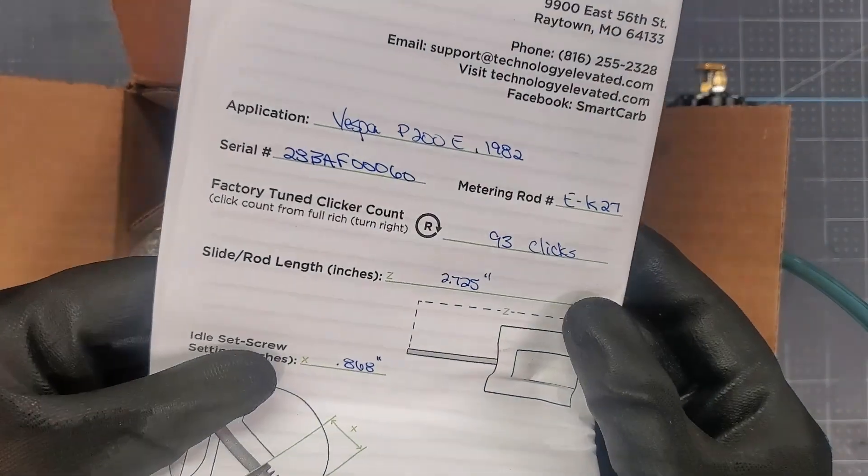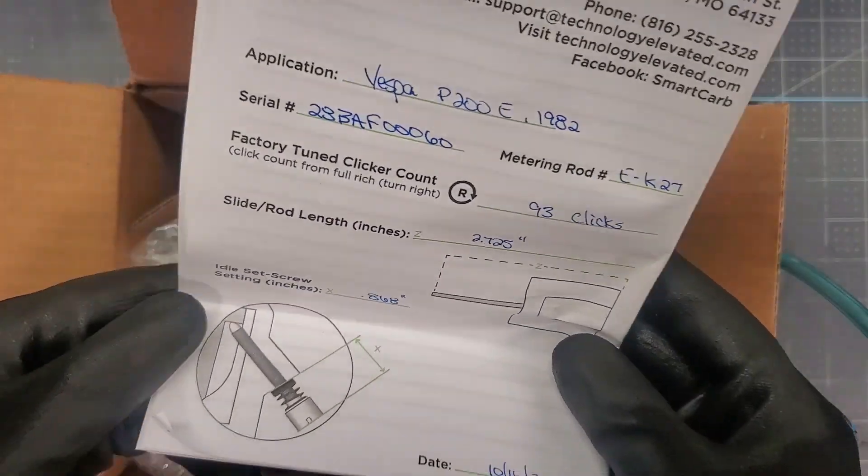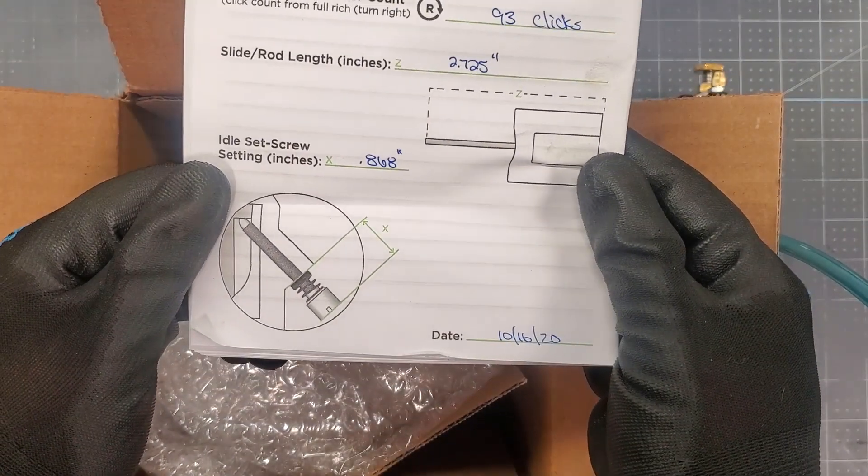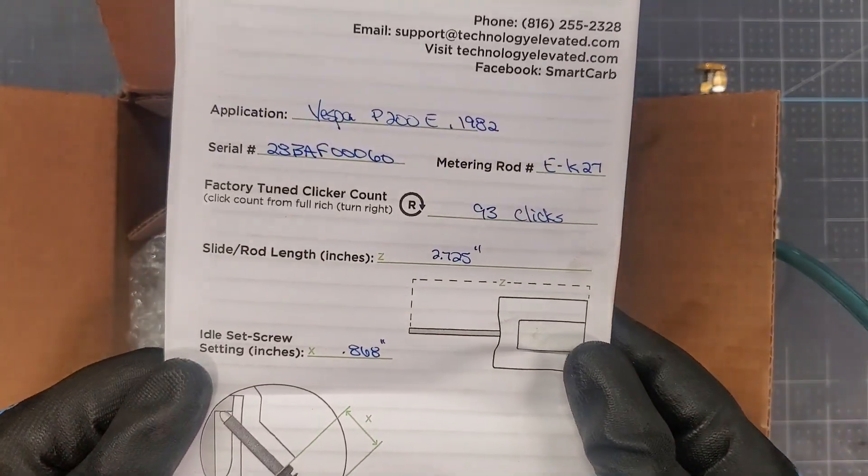Aside from the carburetor you also get a manual that has all these specs marked on the back and when the carburetor was made. Do not be a man and throw this away, you will really need this manual.